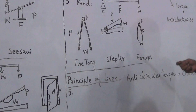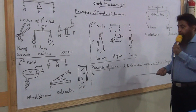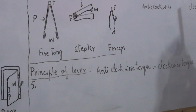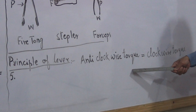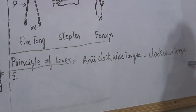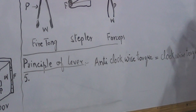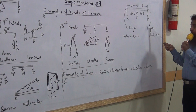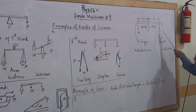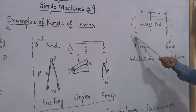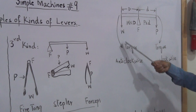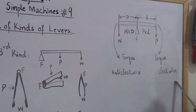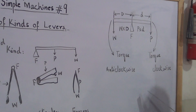These were the examples of levers. You have to draw all these diagrams in your copy along with the examples. Now our last topic for today is the principle of lever. The principle of lever states that the anti-clockwise torque must be equal to the clockwise torque, then the lever is in equilibrium — meaning the lever is balanced. On one side is effort and on the other side is load. If load is applied, the lever moves anti-clockwise; if effort is applied, it moves clockwise.